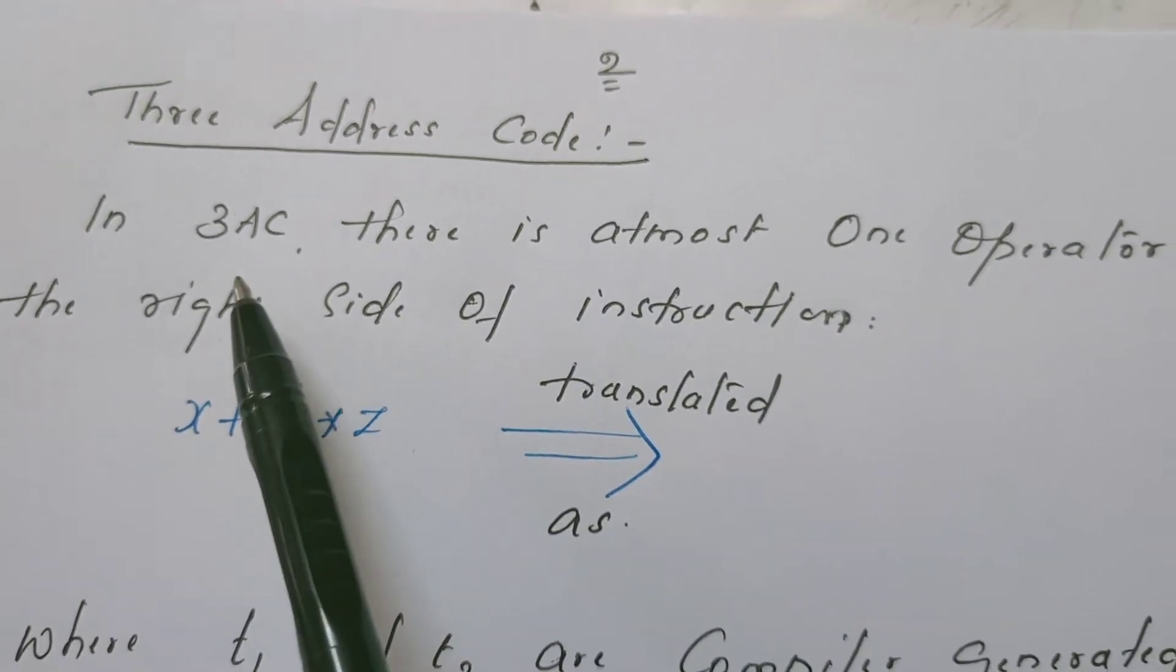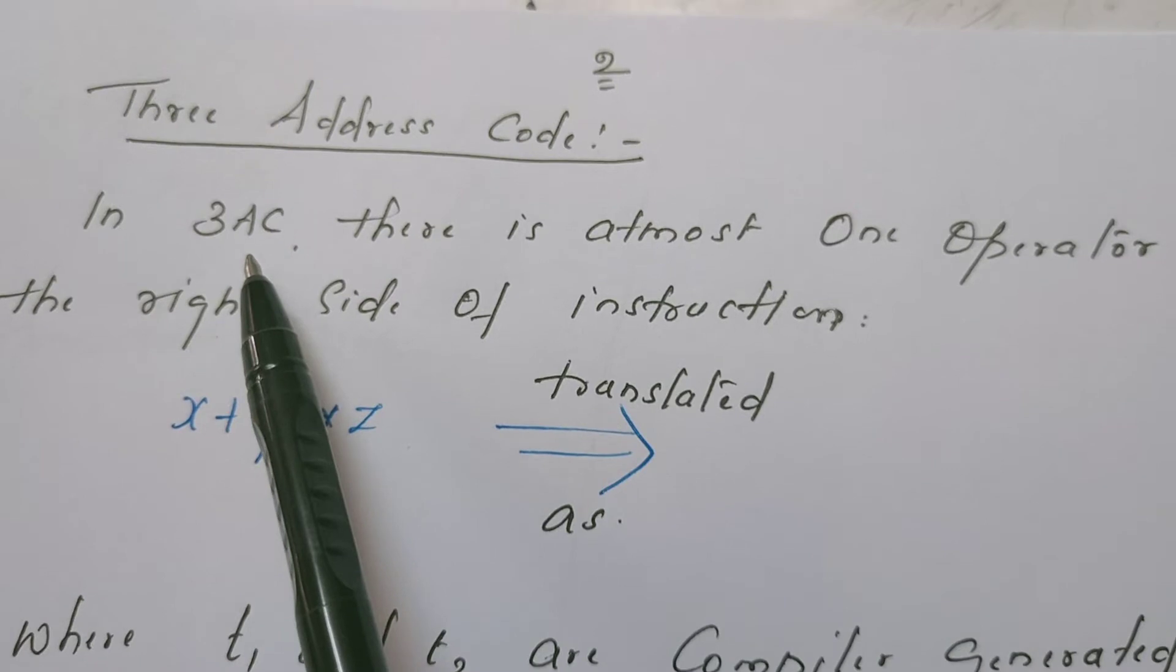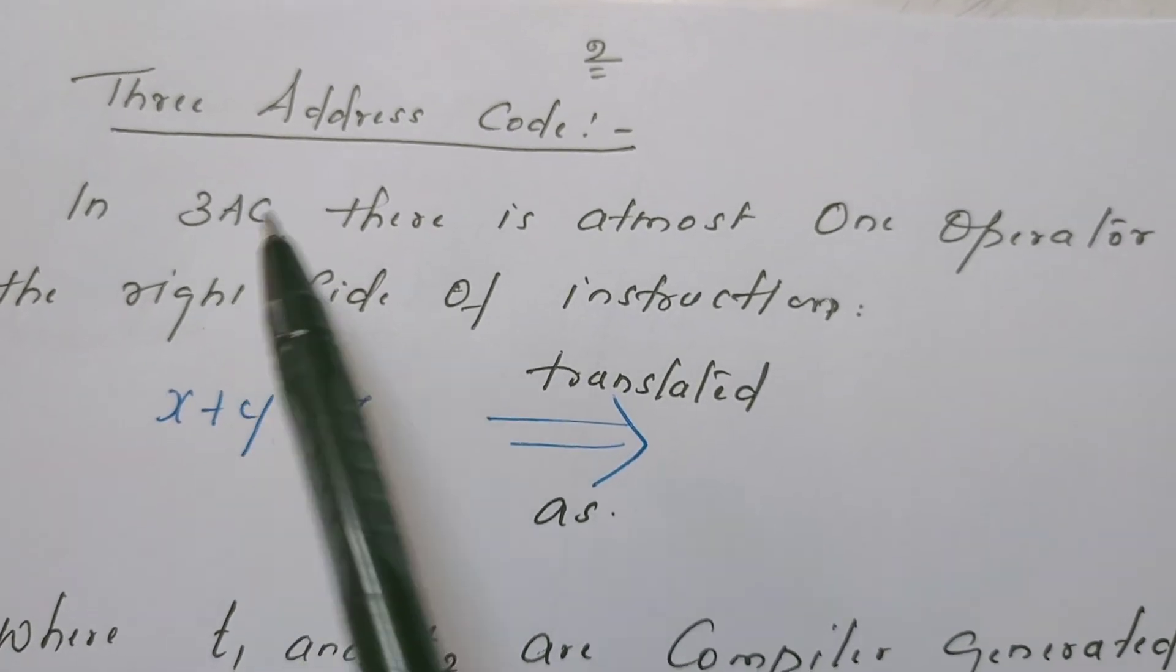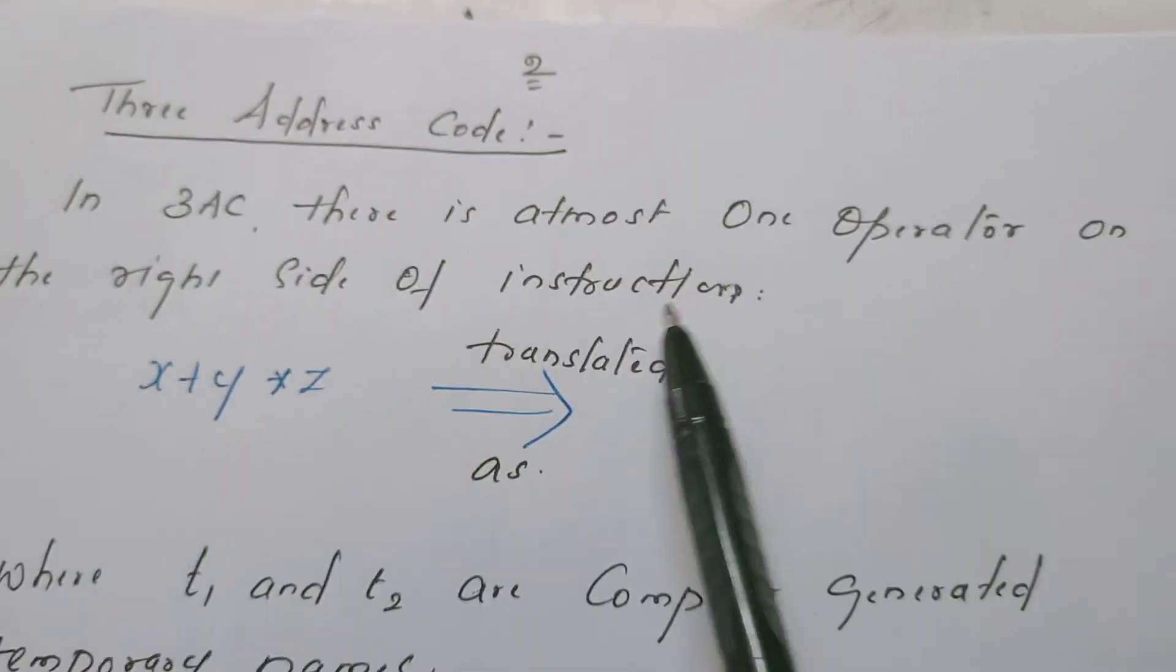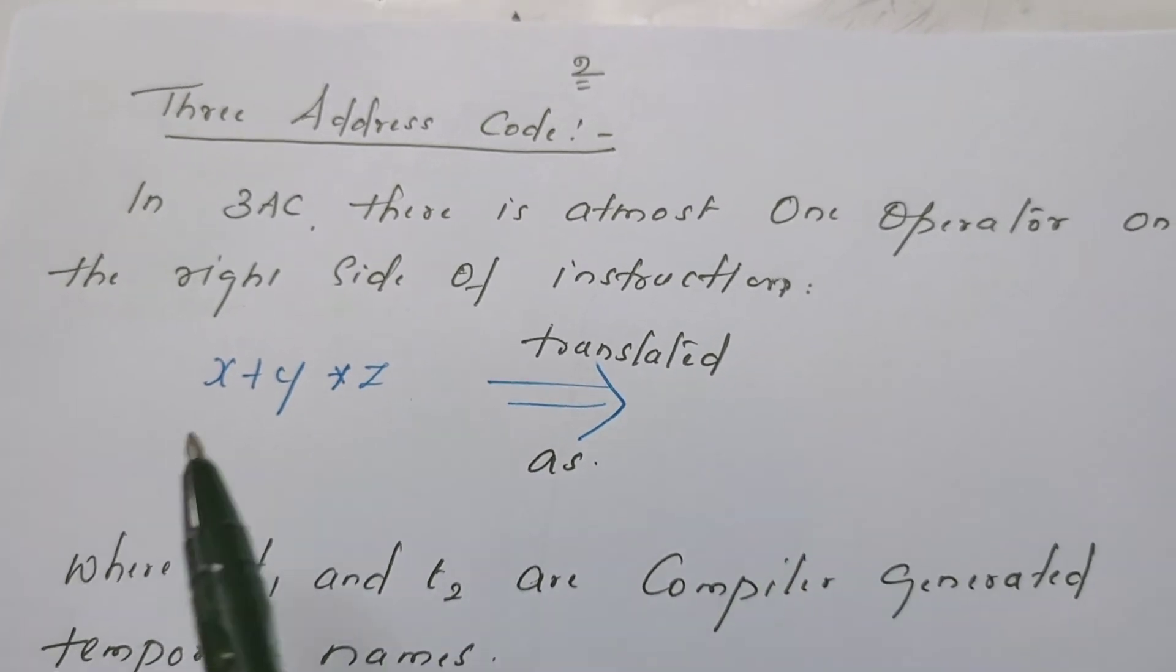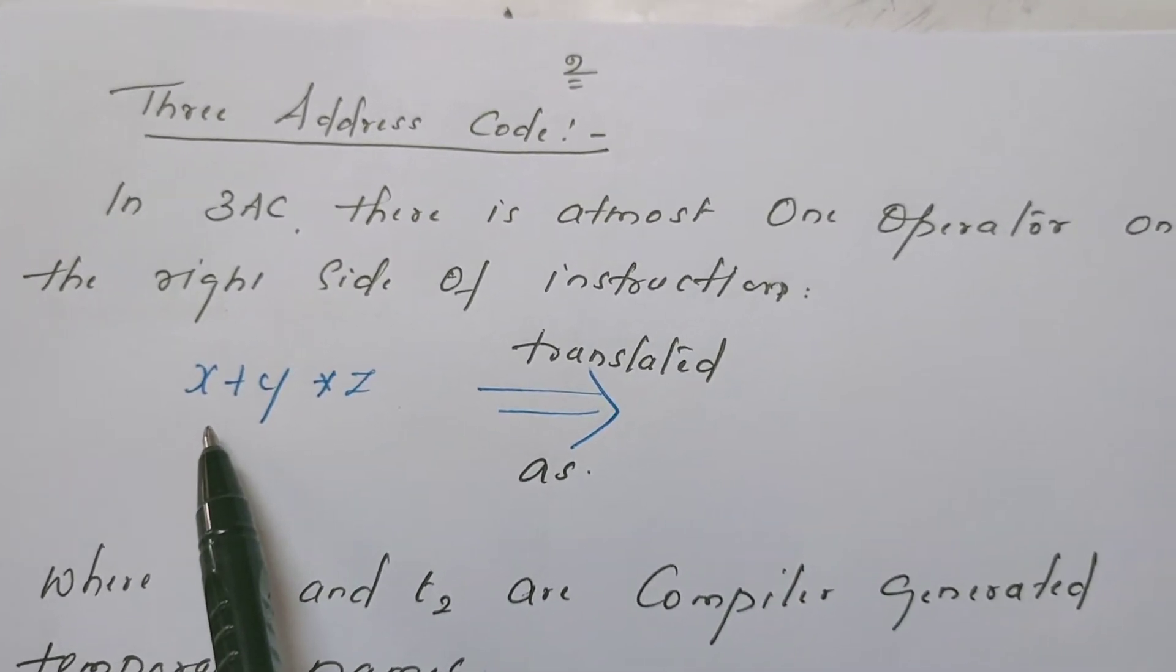In 3 address code, it is one of the intermediate representations. In 3 address code, there is at most one operator on the right hand side of the instruction. So for example, consider this expression.